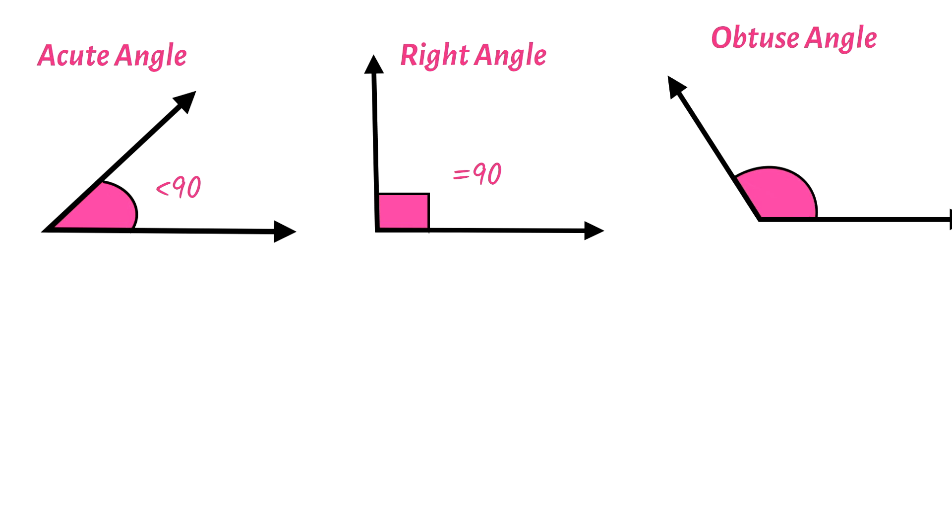An obtuse angle is an angle that is greater than 90 degrees, but less than 180 degrees. Example, 100 degrees and 120 degrees will be obtuse angles.